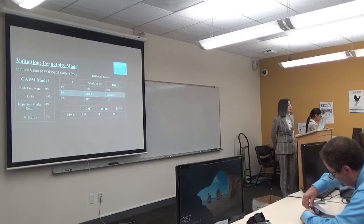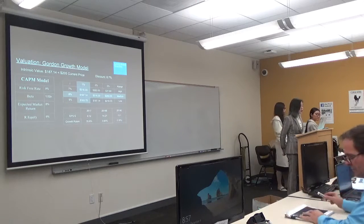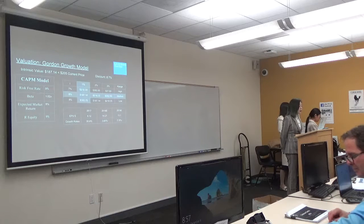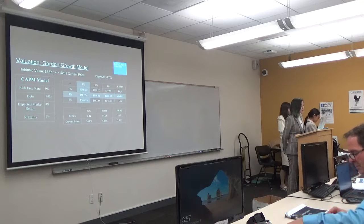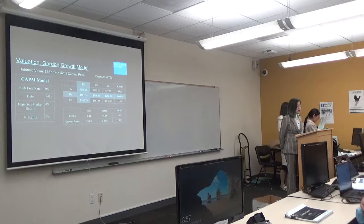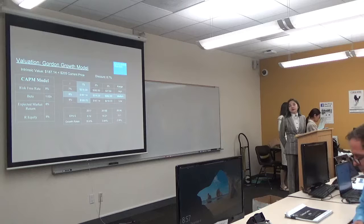On the Gordon growth model, the value is 187.14, and the discount should be 8.7%.